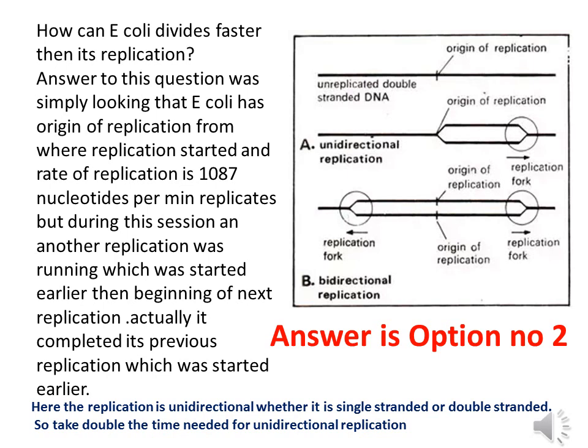You can see the difference between unidirectional and bidirectional replication in the figure. Figure A indicates unidirectional replication, in which replication proceeds only in one direction, while figure B indicates replication proceeding in two directions. So unidirectional replication will be slower than bidirectional. Usually E. coli doubles in 20 minutes while replication takes about 40 minutes as indicated in the question.